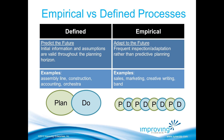The answer is the difference between defined and empirical processes. In the defined world, we try to predict the future - assuming all initial information and assumptions remain valid throughout the planning horizon. Empirical means adapting to the future through frequent inspection and adaptation - making decisions based on actual data. That's the approach taken for complex systems. If you don't know what things will look like at the end, you need empirical data. This isn't a new concept - even in the waterfall world, people used prototypes to do some work, get data, and make decisions based on that.